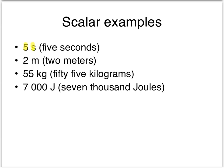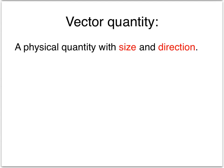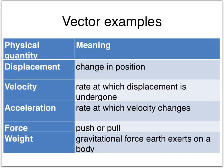In contrast, a vector quantity has both size and direction. Here are some examples.